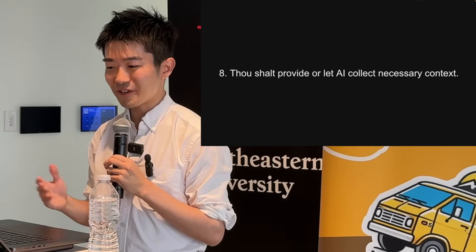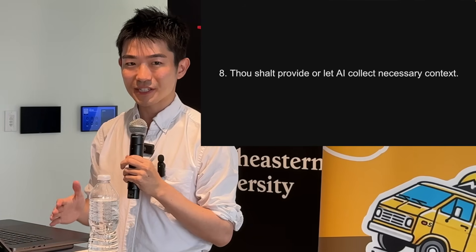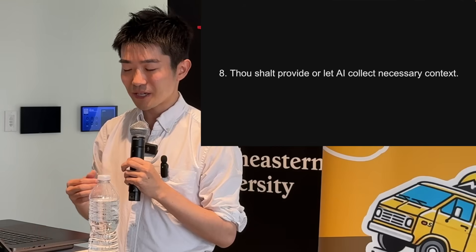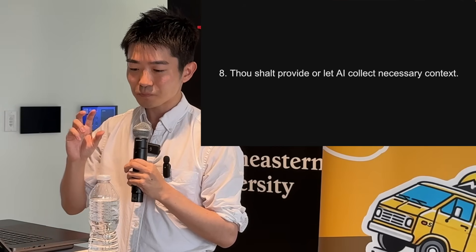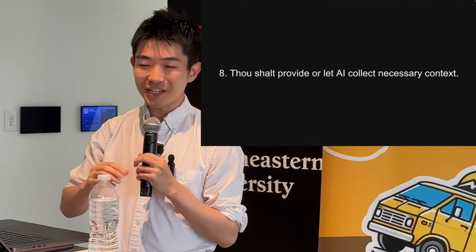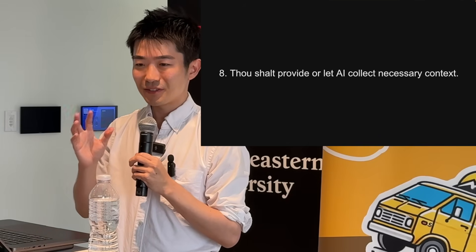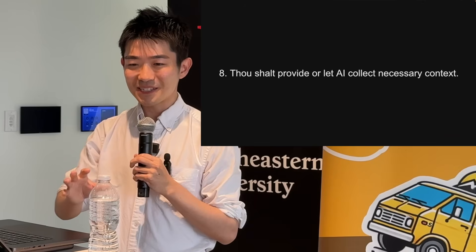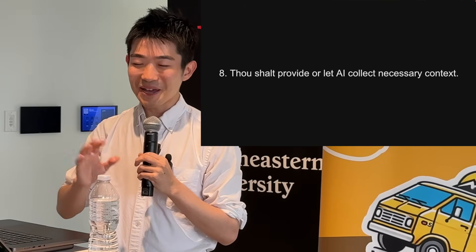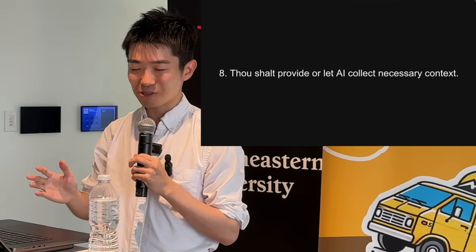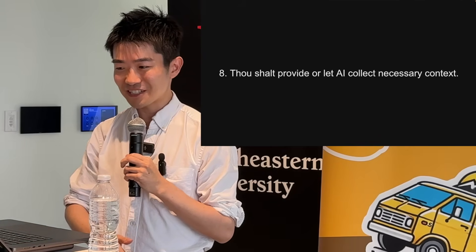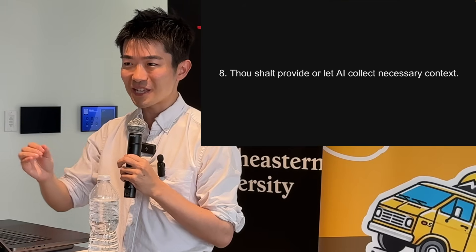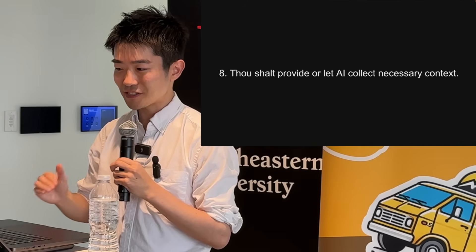Number eight: provide or let AI collect necessary context. If you're working with the latest framework or the latest API, the AI might not have enough training data on that particular version. What you want to do is copy and paste the right parts of the documentation. Command-A and Control-A are your friends in the world of AI — select all, copy everything, give it to AI, make sure it has the right context. You can say, based on this documentation, can you create this thing? And that works pretty well.